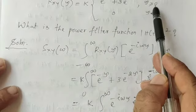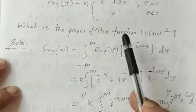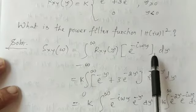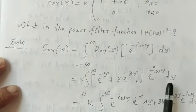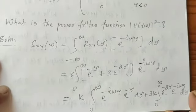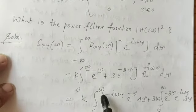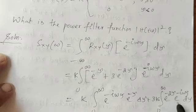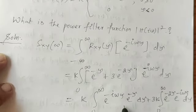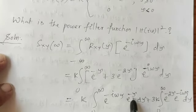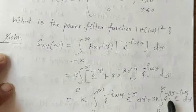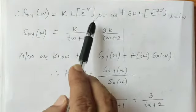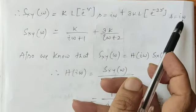Since the function is defined from 0 to infinity, we change the limit accordingly. Separating terms: the first term is k times the integral from 0 to infinity of e^(minus tau) · e^(minus i·omega·tau) d·tau, and the second term is 3k times the integral from 0 to infinity of e^(minus 2·tau) · e^(minus i·omega·tau) d·tau. These are Laplace transforms evaluated at s = i·omega, giving Sxy(omega) = k/(i·omega + 1) plus 3k/(i·omega + 2).